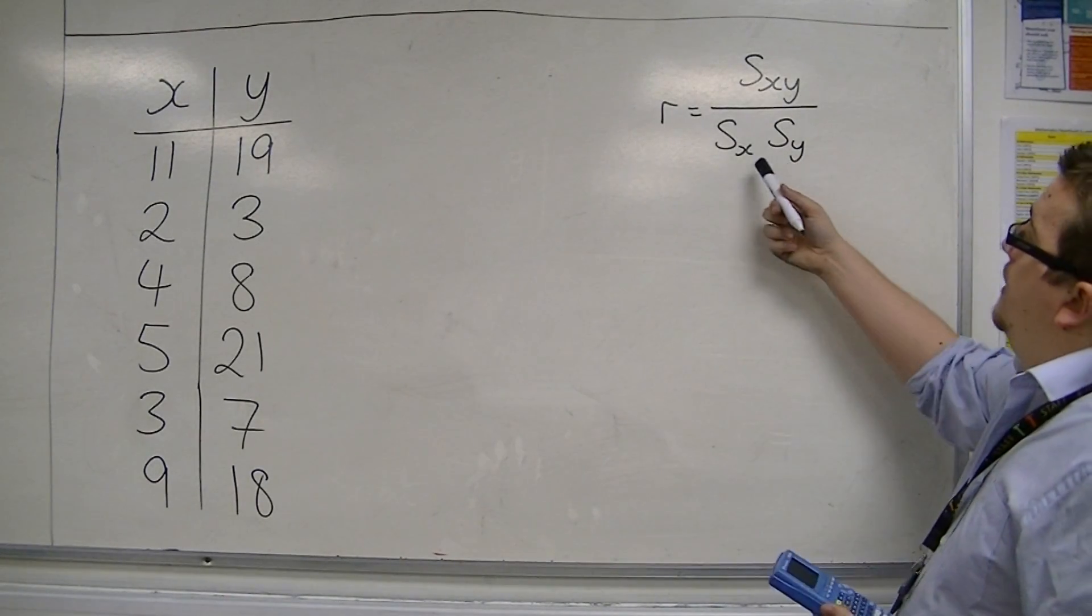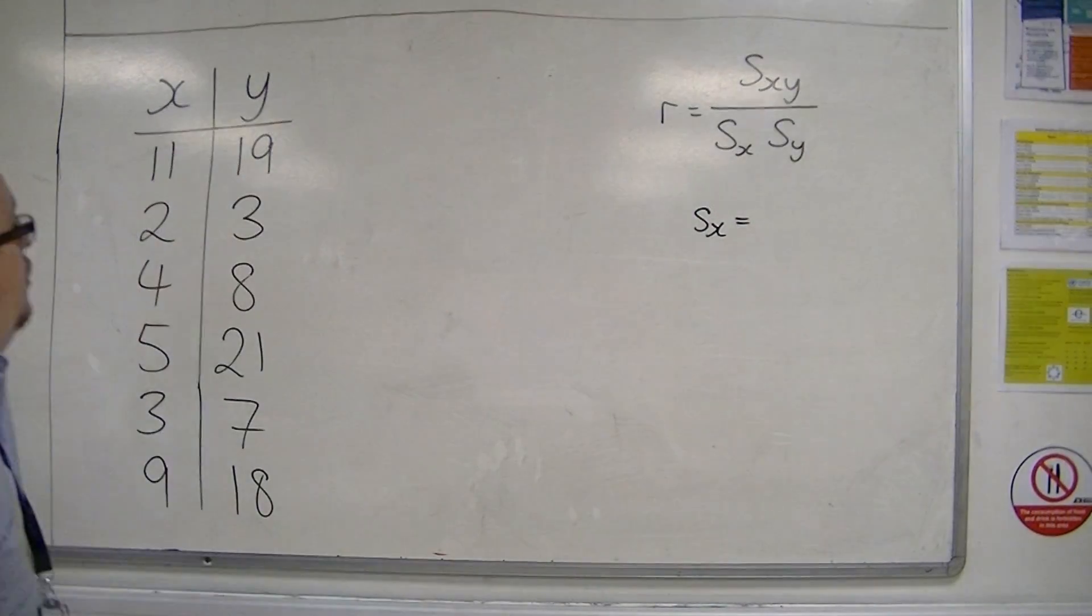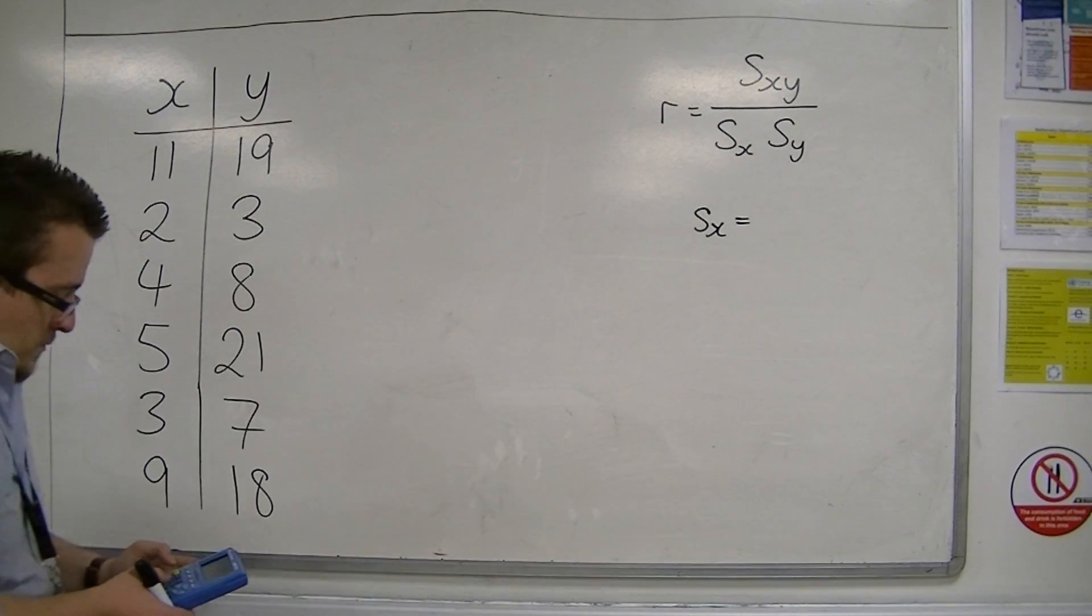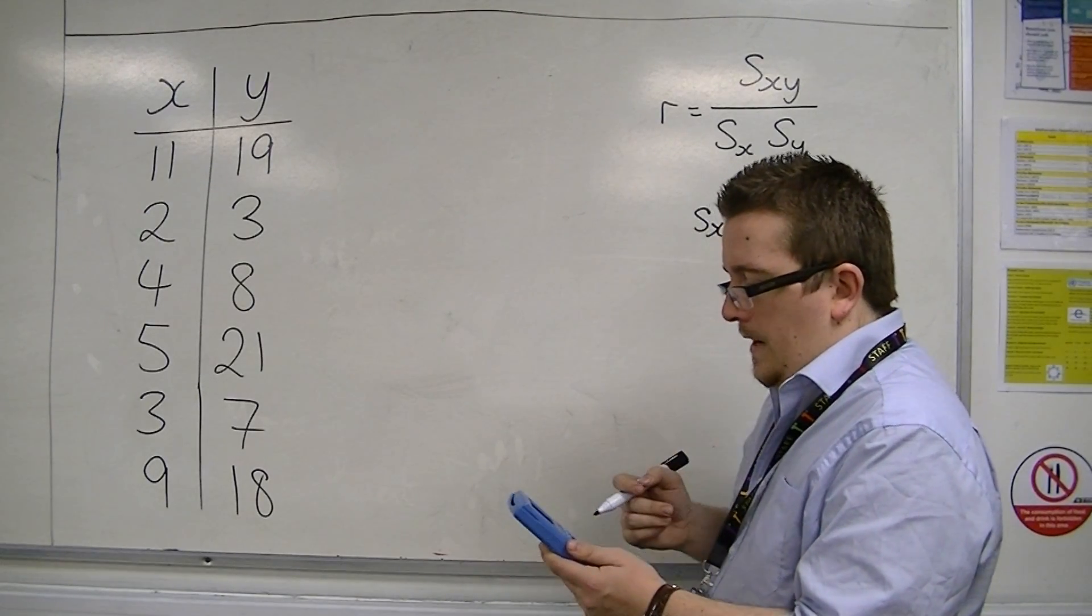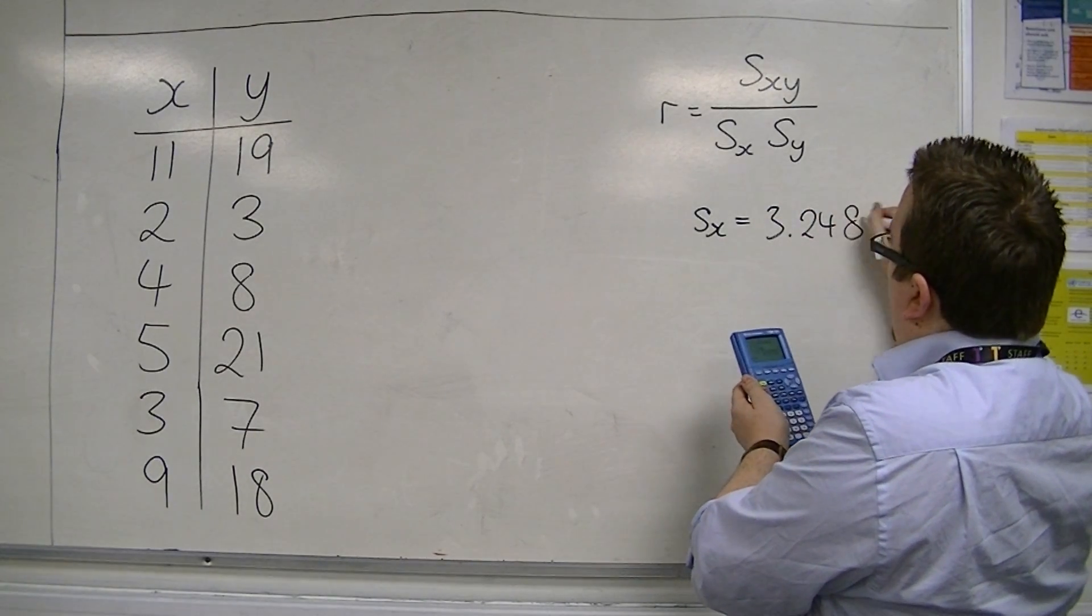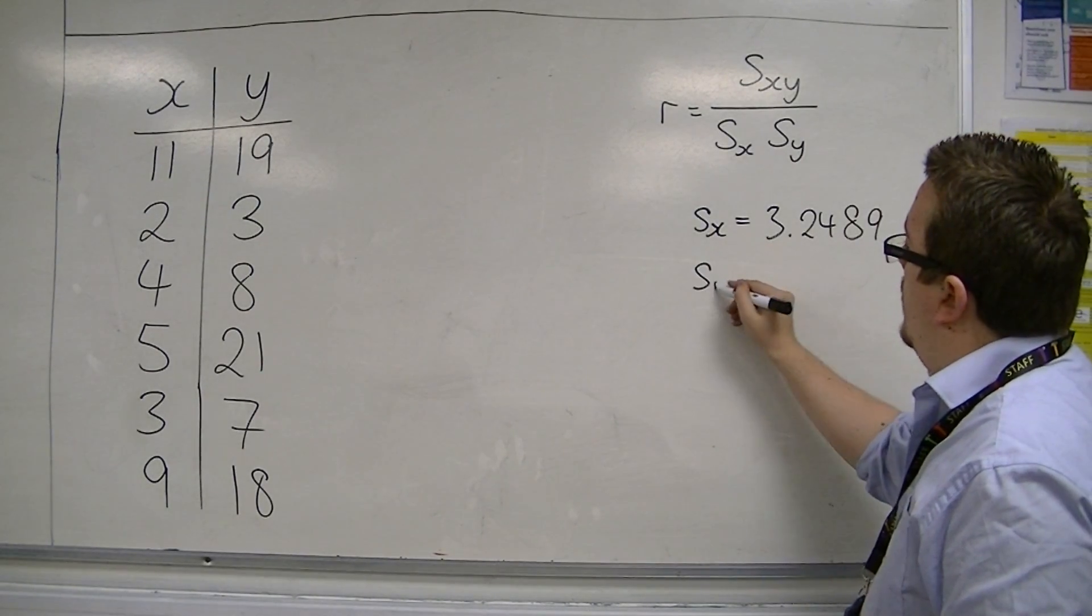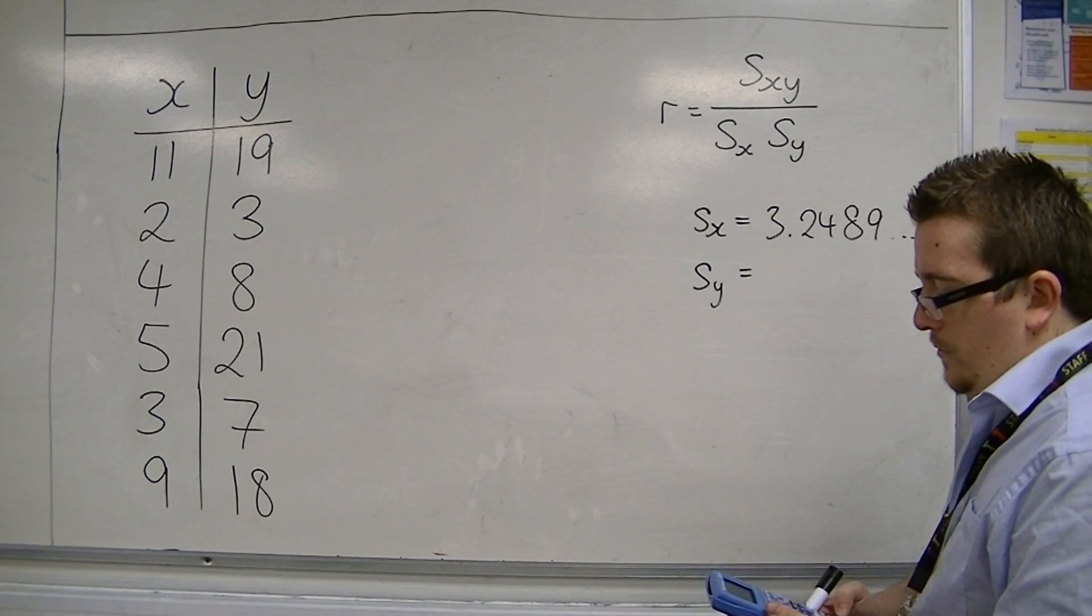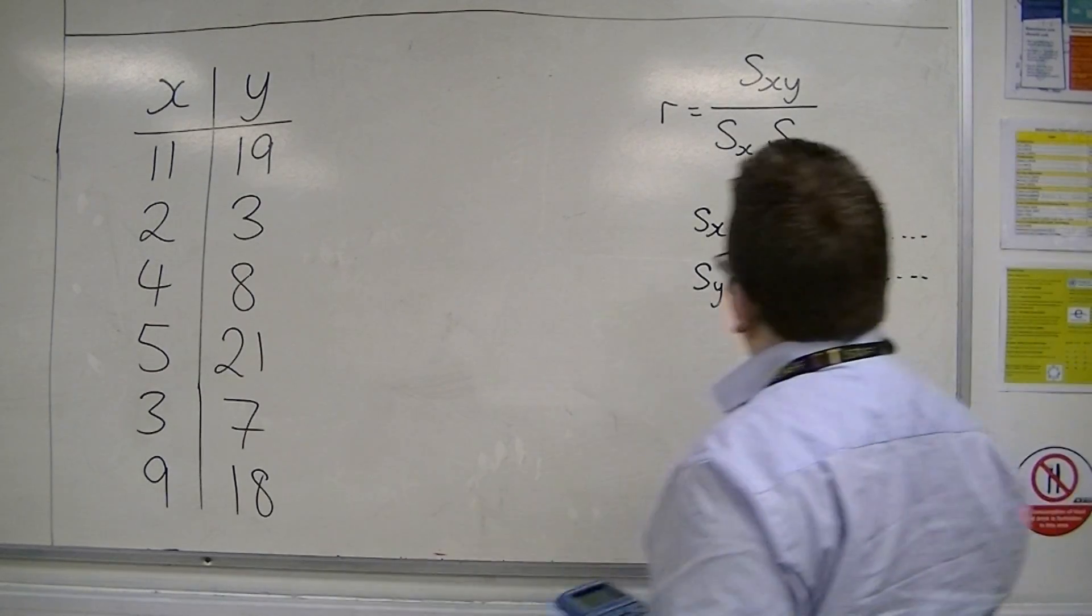So first of all, I'm going to find S_X. So S_X is the standard deviation of the X values. So I'm going to plug them into my calculator. The standard deviation of the X values is 3.2489... Now let's find the standard deviation of the Y values. I'm going to do the same thing, L2, and we get 6.8960...